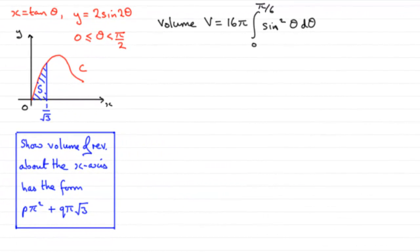Now this last part of the question, we've got to now find the exact value for this volume, giving our answer in the form of p pi squared plus q pi times root 3, where p and q are constants.